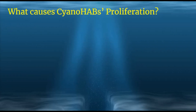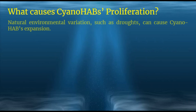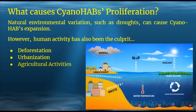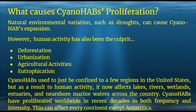What causes cyanoHAB proliferation? Natural environmental variations such as drought can cause cyanoHAB expansion. However, human activity has also been the culprit, such as deforestation, urbanization, agricultural activities, and eutrophication. Recent evidence shows that microcystins can be transported down watersheds from freshwater origins to marine and estuarine environments at the land-to-sea interface, accumulating in coastal seafood. CyanoHABs used to be confined to a few regions in the United States, but as a result of human activity, they now affect lakes, rivers, wetlands, estuaries, and nearshore marine waters across the country. They have proliferated worldwide and can affect every continent except Antarctica.